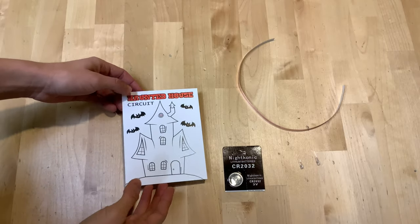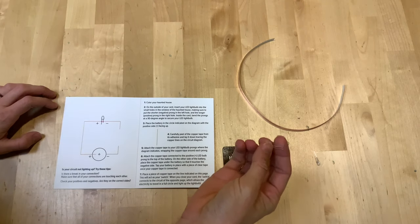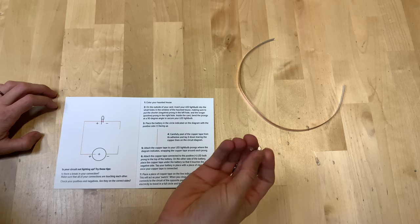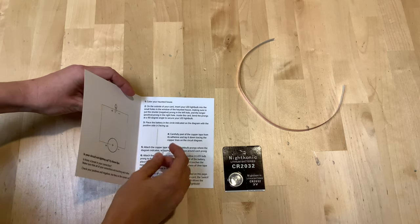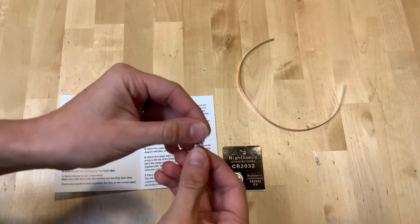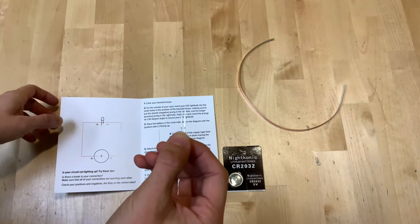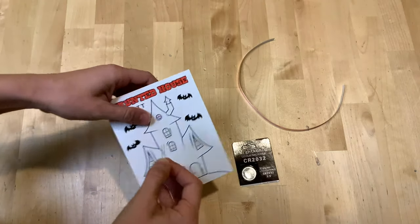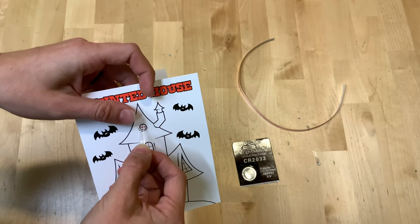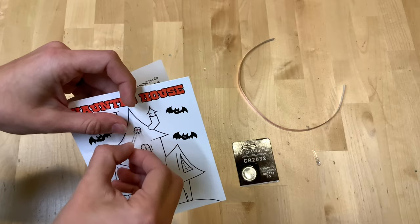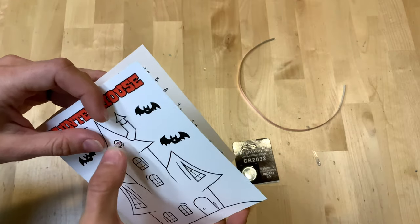I'm going to skip that step and move to inserting our LED light bulb into the small holes in the window of the haunted house, making sure to put the shorter negative prong on the left. You can see one prong is shorter than the other. We're going to put the shorter prong on the left hand side and the longer prong on the right side. We'll just get both of those through those holes and push it all the way through.